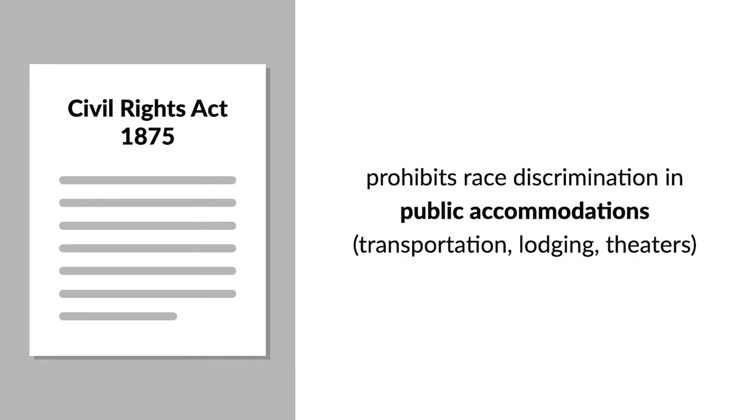To help implement these amendments, Congress passed the Civil Rights Act of 1875. The first two sections of the statute prohibited race discrimination in public accommodations, such as transportation, lodging, and theaters.